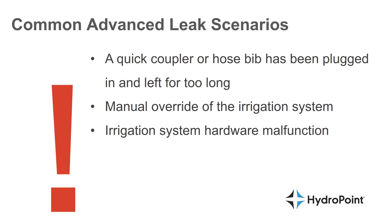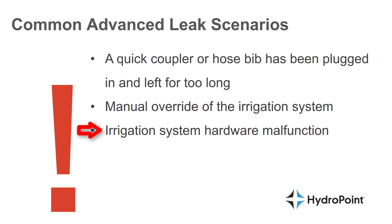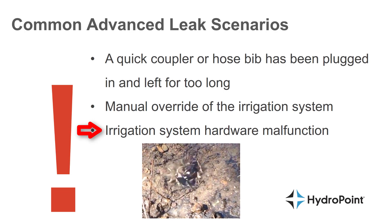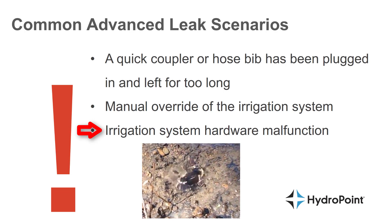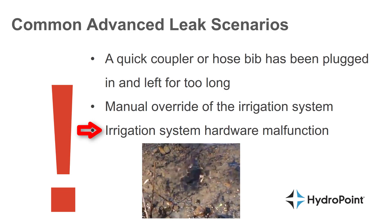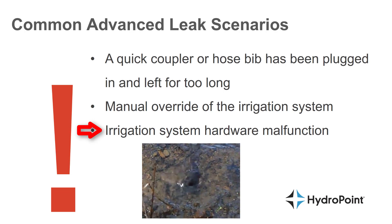While these kinds of conditions can be caused by hose bibs and quick couplers, they can also be caused by a manual override of the irrigation system — sprinkler techs opening valve boxes and manually overriding valves by opening the solenoid or the bleed screw. In a more high-stakes scenario, an advanced leak can also mean a malfunction of your irrigation system. For instance, if a mainline fitting comes loose and starts to leak water, this would be another example of an advanced leak scenario.